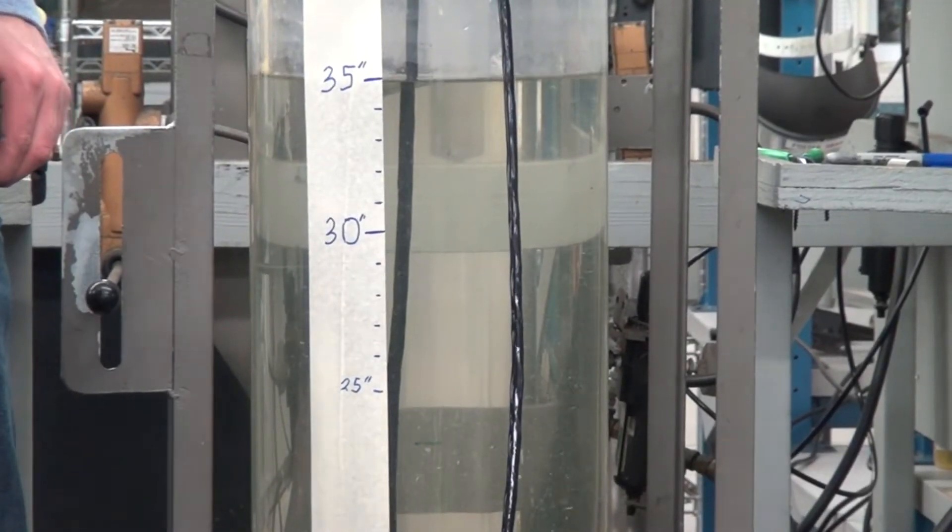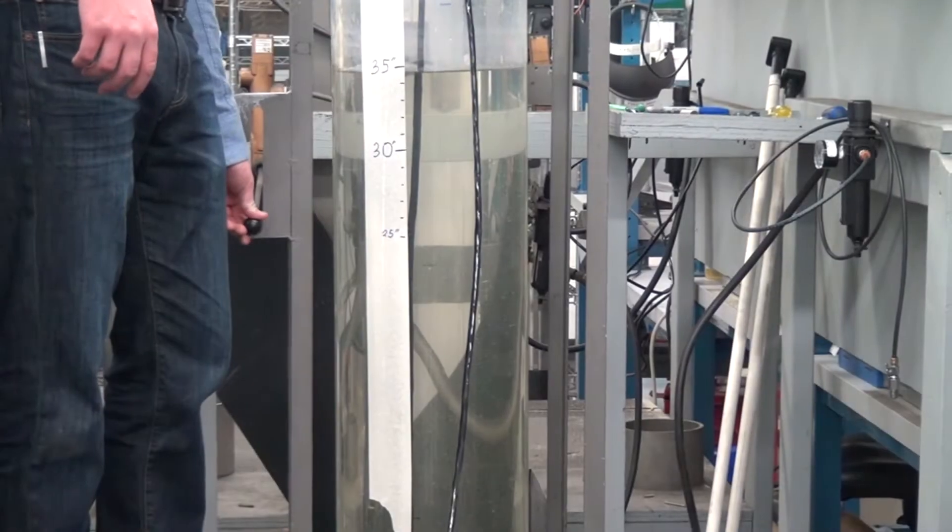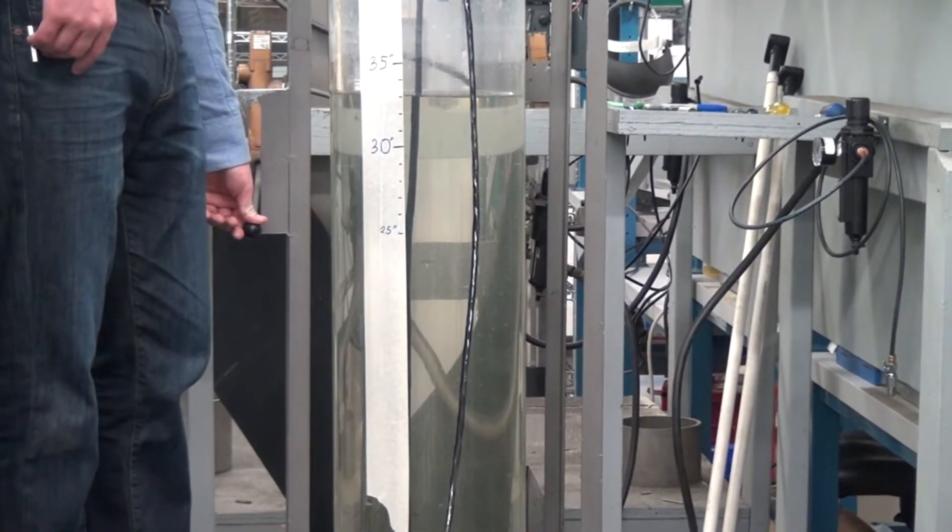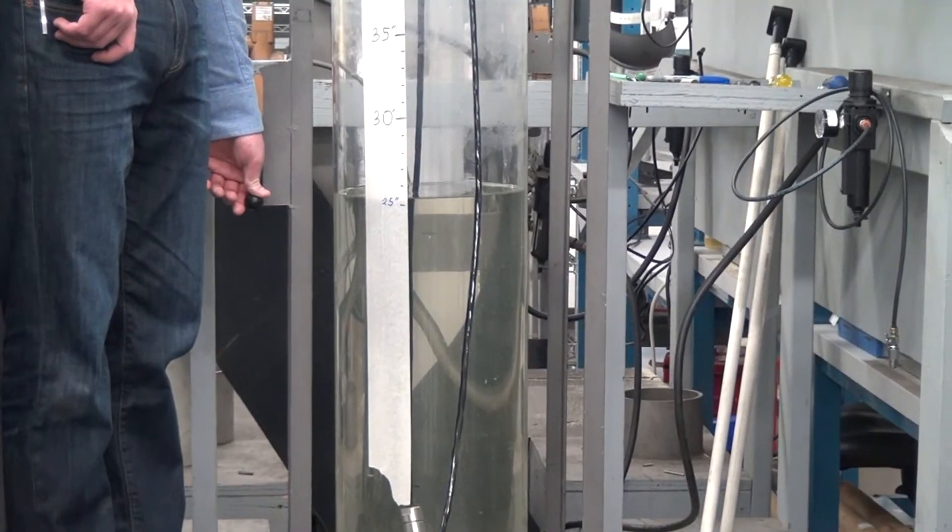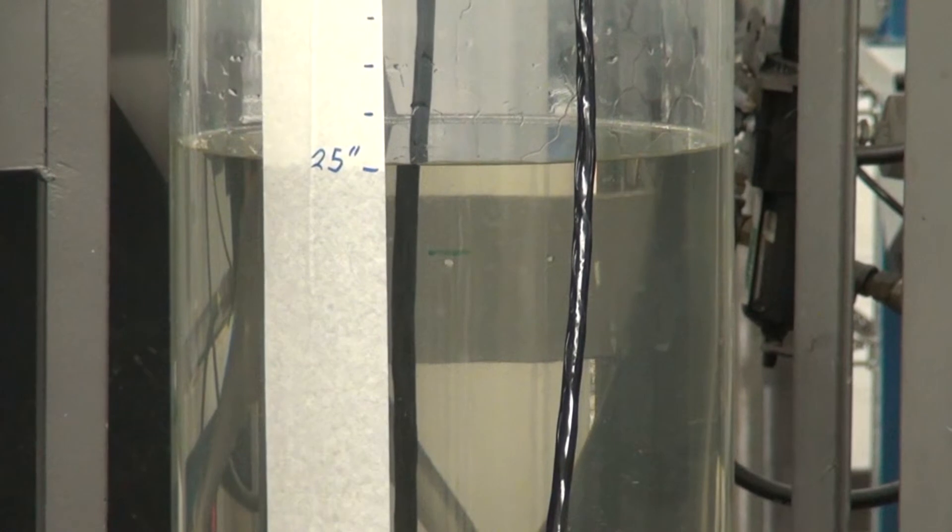If we change the level from 35 inches of water column down to 25 inches of water column, you will see the level output change on the display as well. Now the level is at 25 inches of water column.